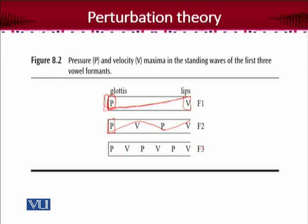That's formant frequency F3, and you can see the same pattern followed here. Ultimately, we have those frequency resonances — the periodical shift of energy, which is the resonance. That resonance gives us the division of positions for pressure maxima and velocity maxima in the standing waves of the first three vowel formants. That's an important idea about the perturbation theory of speech production.